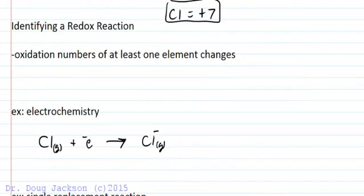Identifying a redox reaction. So if we're going to identify this redox reaction, we have to be able to calculate those oxidation numbers. And the definition of a redox reaction is that the oxidation number of at least one element is going to change.